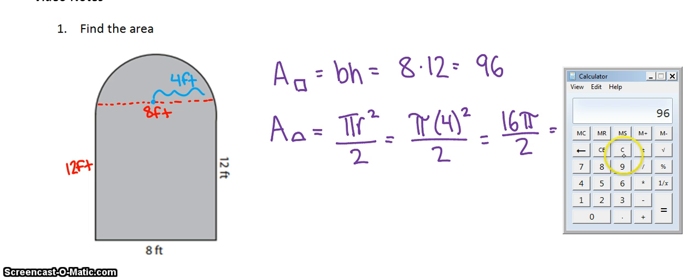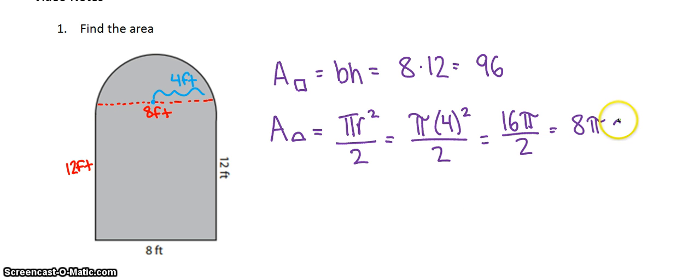If I wanted exact, that's what you would tell me. If I wanted you to round it, you'd multiply by 3.14, or better yet, your π key in your calculator. You get approximately 25.12, and our units are feet. Since we're talking about area, it's feet squared.